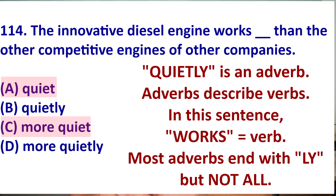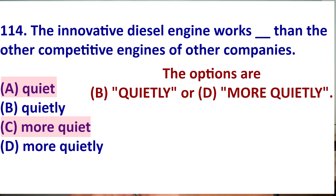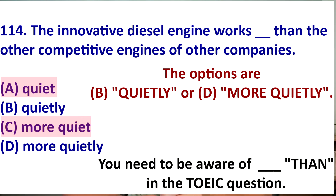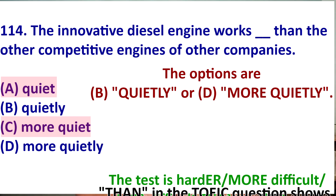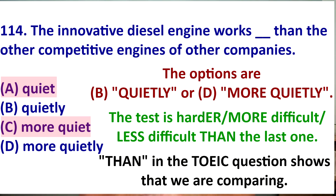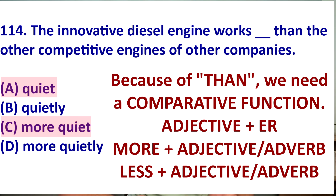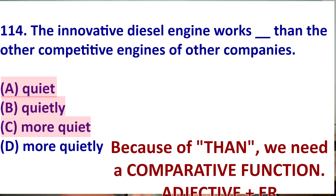'-ly' is usually an adverb, so now we can have 'quietly' or 'more quietly.' If we look at this, we can see 'than' after the initial sentence — T-H-A-N. This tells us we are comparing. For example: the test is harder than the last one; the test is more difficult than the last one. Here we have 'than,' so we need a comparative term. 'Quietly' is just a base adverb, but we need to compare because we have 'than.' So the answer is D, more quietly.